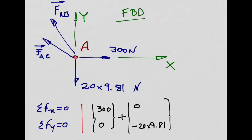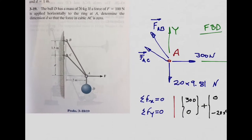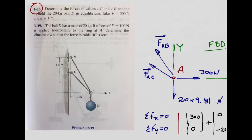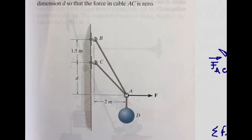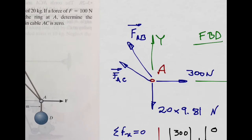Now we work on the cable forces FAC and FAB, but first we need to decompose them into the coordinate axes. For this example, distance d equals 1 meter. To find the angle for cable AB — let's call it alpha — we use tangent of alpha equals 2 over 2.5, giving alpha equals the inverse tangent of 2/2.5, which is 38.66 degrees.